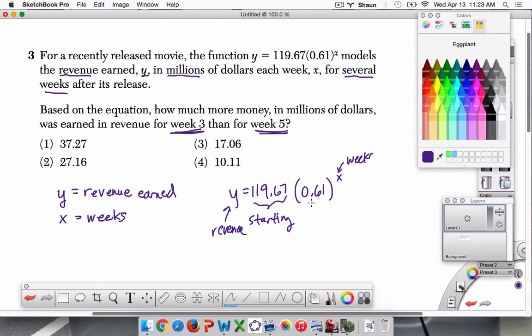What does 0.61 represent? Well, this is the percentage, in this case, decrease in revenue each week. Essentially, this is saying 61% of the previous week's earnings is now being earned the next week. And I'll show you what I mean.